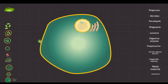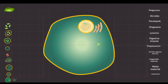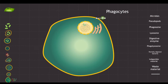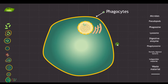We need to understand what phagocytes are. This cell here is one example of a phagocyte — let me label it. Phagocytes are white blood cells, which include macrophages, neutrophils, and dendritic cells. These are three typical examples of phagocytes, and their role is to perform phagocytosis at a higher level compared to other cell types.